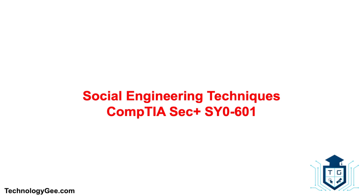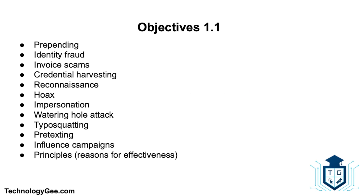What's up everybody, this is your boy Tech G back with another video to help you successfully pass the CompTIA Security+ SY0-601 certification. In this video you're going to learn about social engineering techniques such as pre-pending, identity fraud, invoice scams, credential harvesting, reconnaissance, hoax, impersonation, watering hole attacks, typosquatting, and pretexting, influence campaigns.